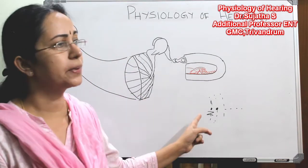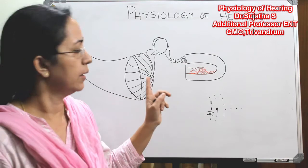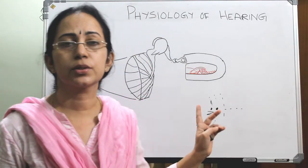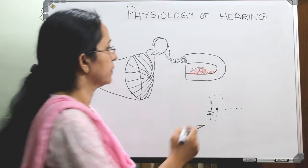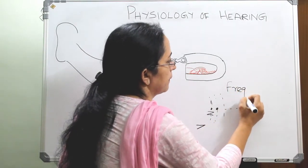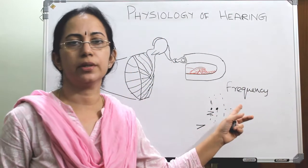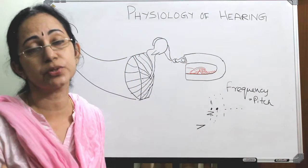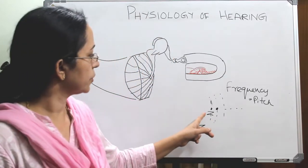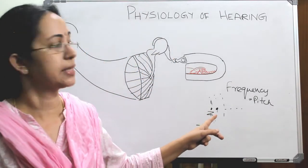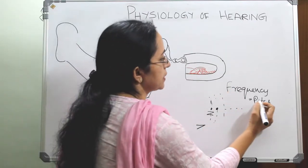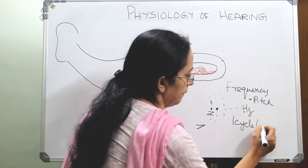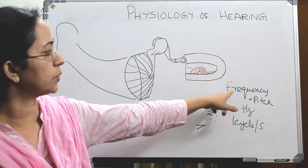There is compression and rarefaction of the particles in the air medium. This back and forth motion of the air particle is called frequency. Frequency is also called pitch — we describe sound as high pitched or low pitched. The number of cycles per second is the frequency, and it is measured in Hertz. One cycle per second equals one Hertz, so the measuring unit for frequency is Hertz.